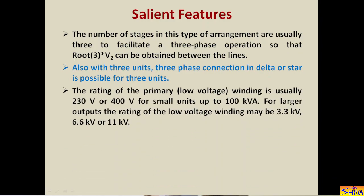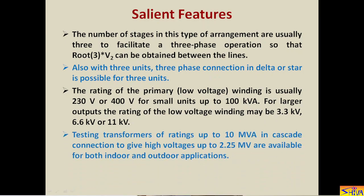The rating of the primary or low voltage winding is usually 230 V or 400 V for small units up to 100 kVA. For larger outputs the rating may be 3.3 kV, 6.6 kV, or 11 kV. Testing transformers of rating up to 10 MVA in cascaded connection can give high voltages up to 2.25 MV (i.e., 2250 kV) and are available for both indoor and outdoor applications.